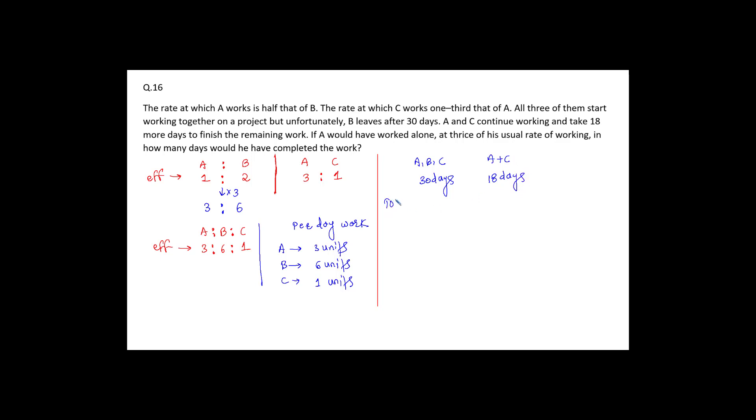So total work is equal to 30 into every day they will do 3 plus 6 plus 1 work when they work together. And in the next 18 days, every day A and C will complete 3 plus 1 work. So the total work becomes how much? 30 into 10 plus 18 into 4.